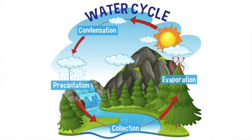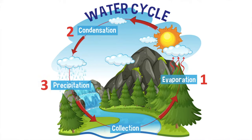The water on earth is constantly moving. The water cycle is the process in which water is recycled over and over again. Water moves from land to the sky and back again. There are four stages of the water cycle: evaporation, condensation, precipitation and collection.